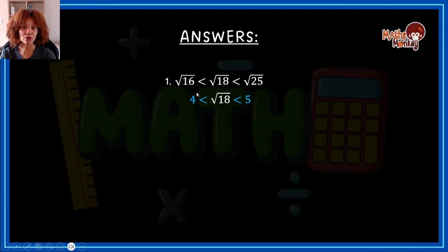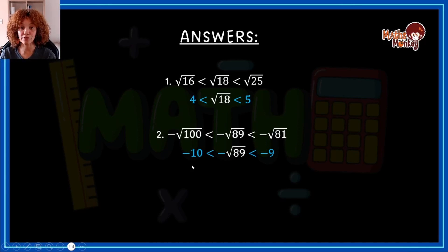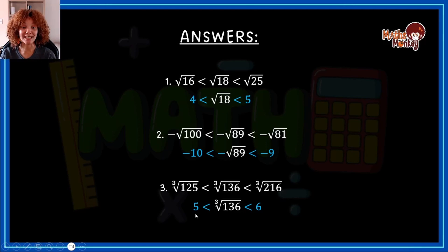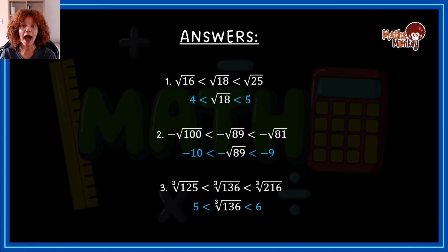Let's see how you did. For the first one, your answer should be between 4 and 5, because you get √16 and √25 on either side. For number two, you would get between −10 and −9. For the third question, I added one with cube roots — you'd look for the perfect cube values on either side of 136, which gives 125 and 216, meaning those values fall between 5 and 6. That's how you work out between which two values on a number line a surd lies.